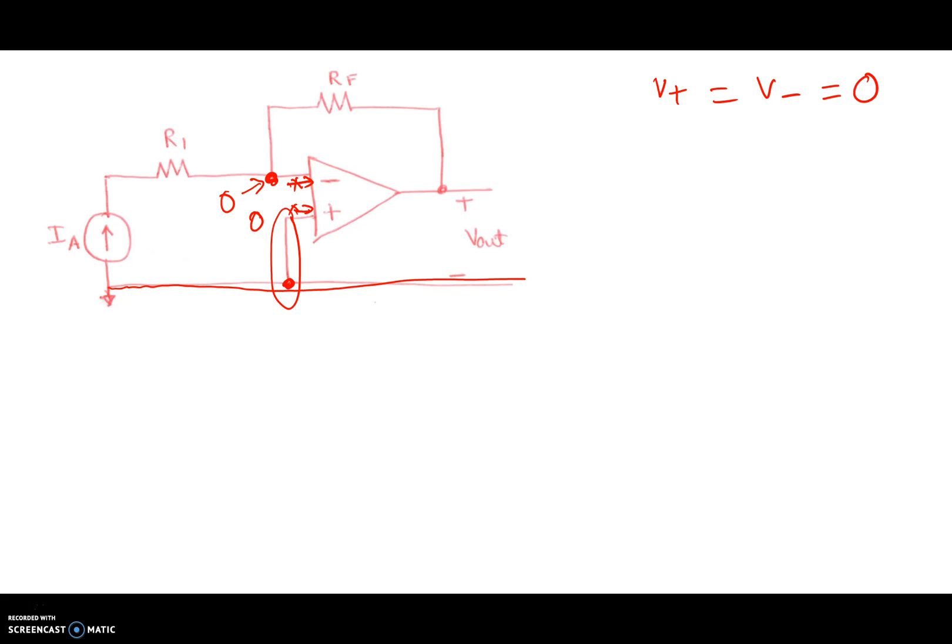Now, we'll do the same kind of circuit analysis as before. So here's the input resistance. So the current source comes in. That current goes through here, through that resistor, comes to this node.